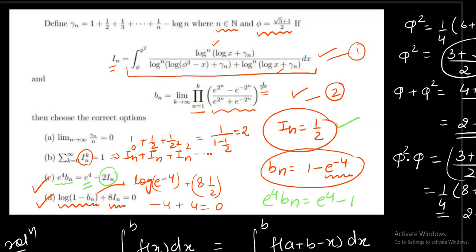For option B: σ from k=0 to ∞ of Iₙᵏ = Iₙ⁰ + Iₙ¹ + Iₙ² +... = 1 + 1/2 + (1/2)² +... This is an infinite GP with first term 1 and common ratio 1/2, so the sum = a/(1−r) = 1/(1/2) = 2. The answer is 2, which does not match option B, so option B is not correct.